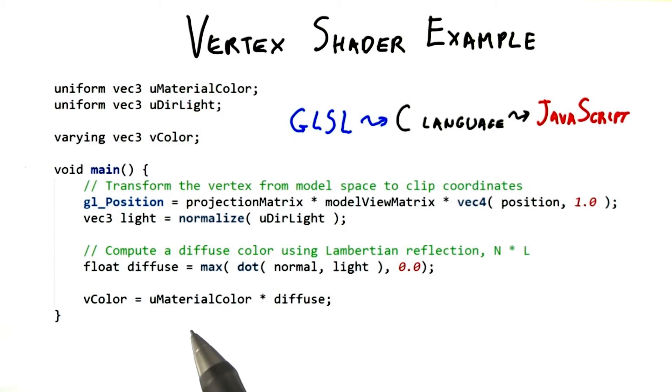The shader language is a lot like C or JavaScript, but has some nice built-in features. Here we're multiplying a vector, the material color, times a single value. The language knows to multiply each value of the color vector by the diffuse value.